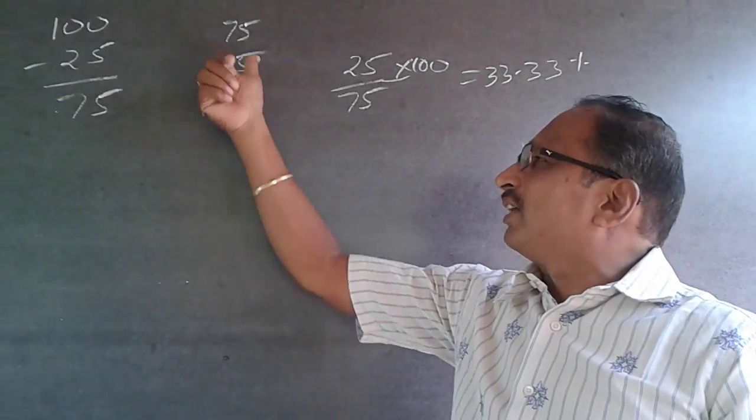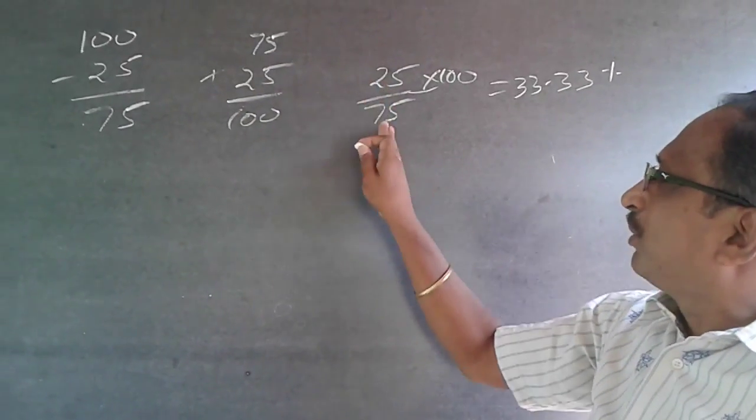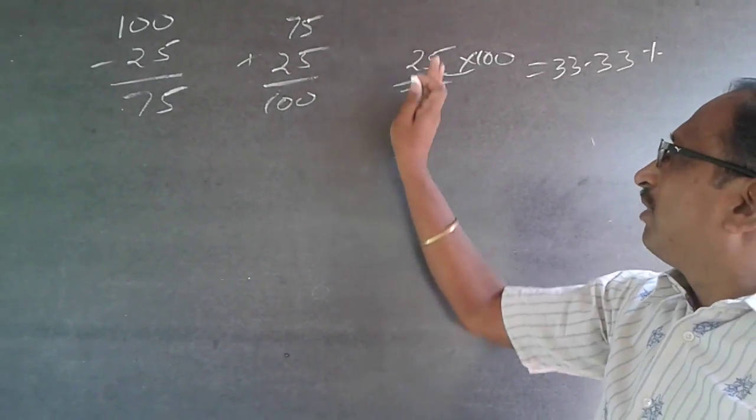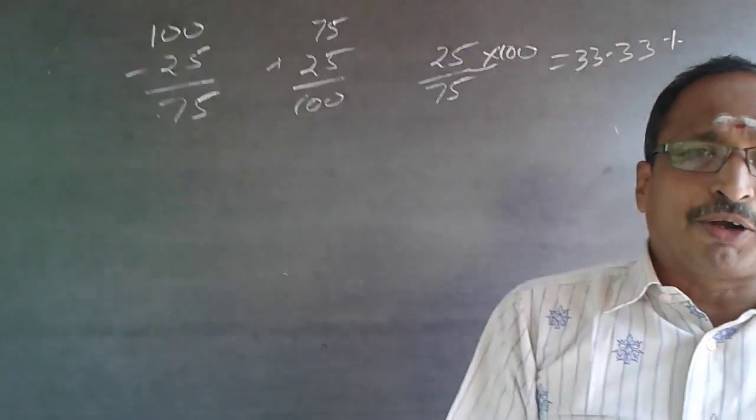75 now has to become 100, so it has increased plus 25. This 25 is on the base figure of 75, so 25 divided by 75 times 100 equals 33.33 percent. Subscribe to my channel, I will be adding questions.